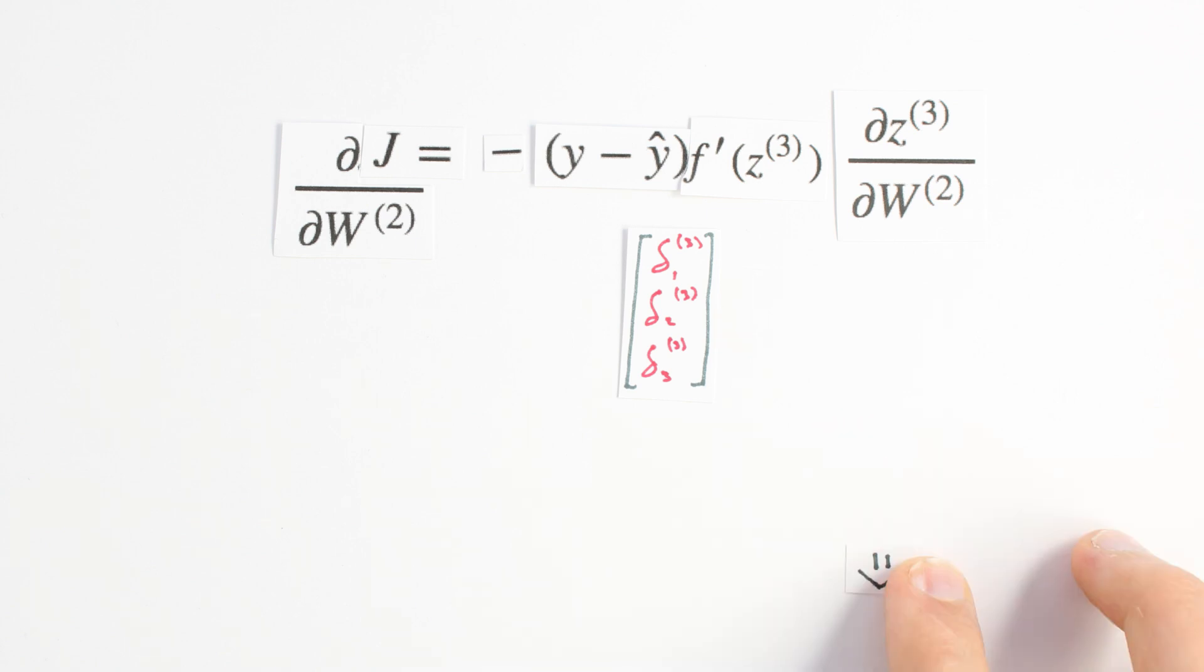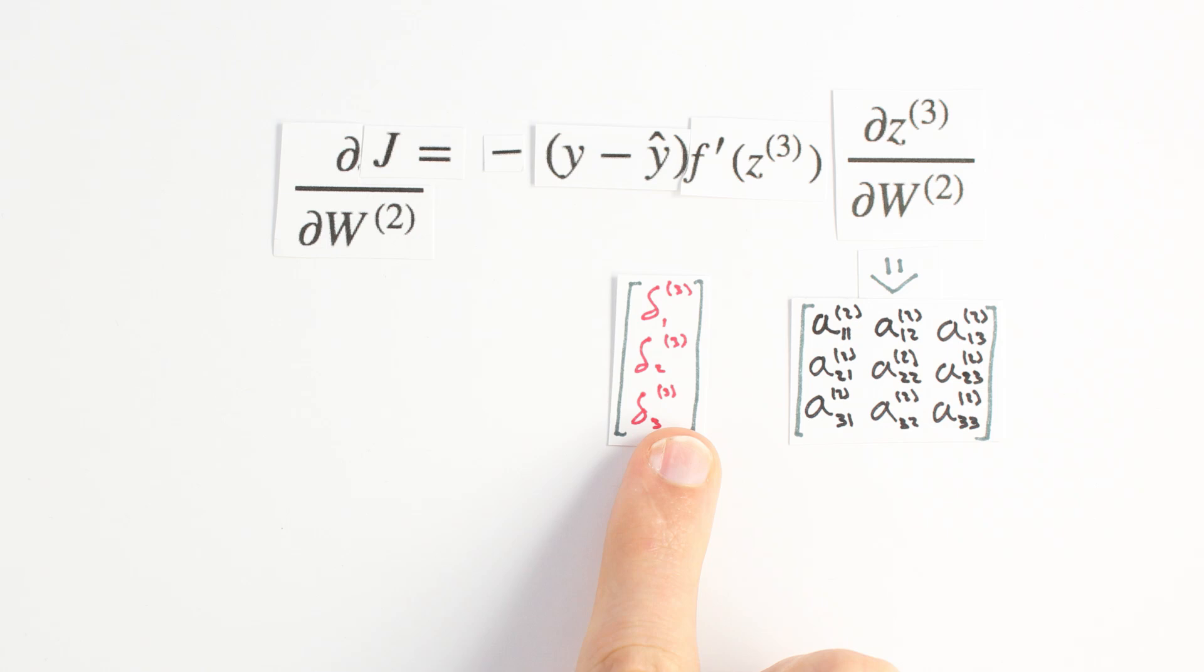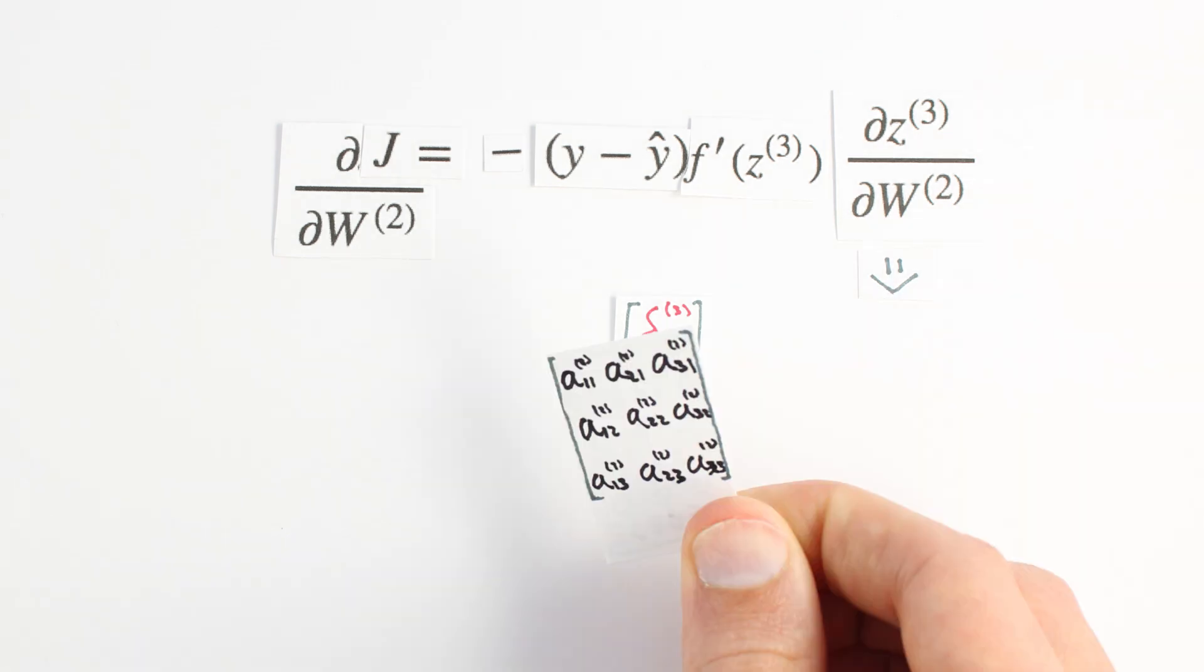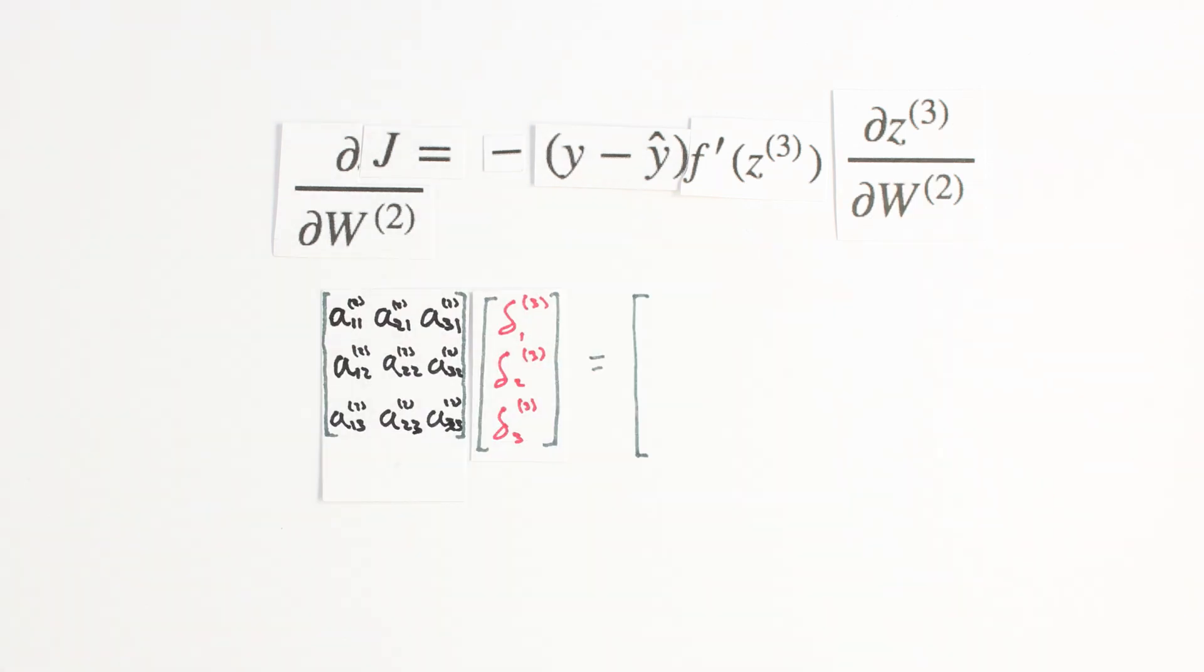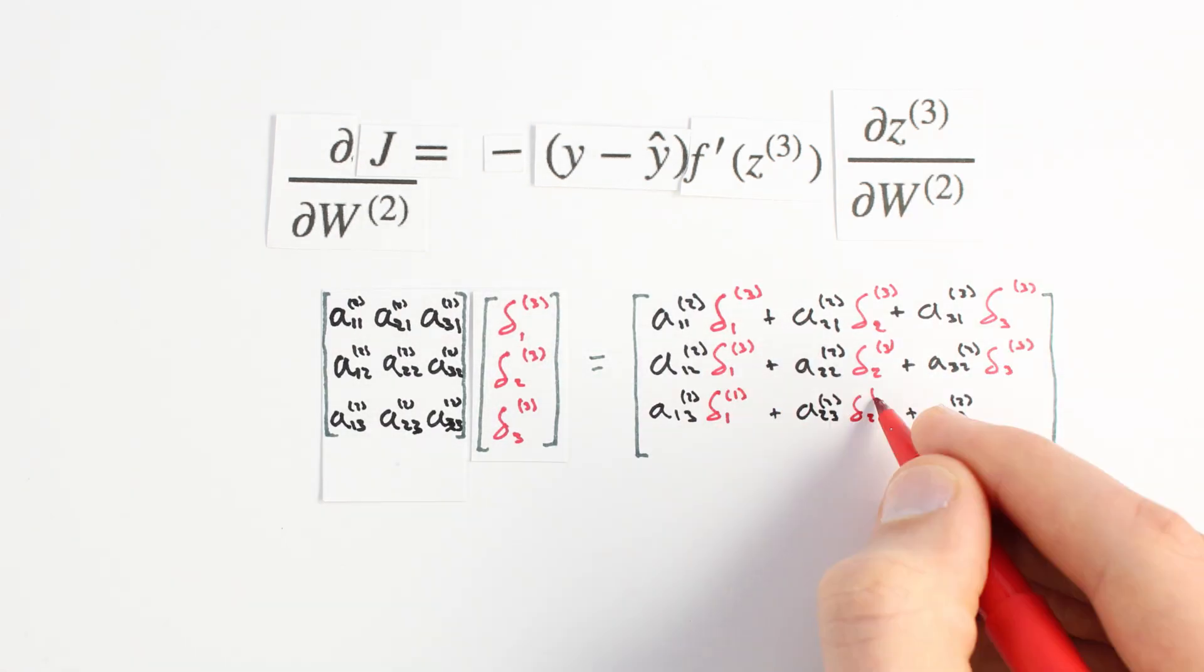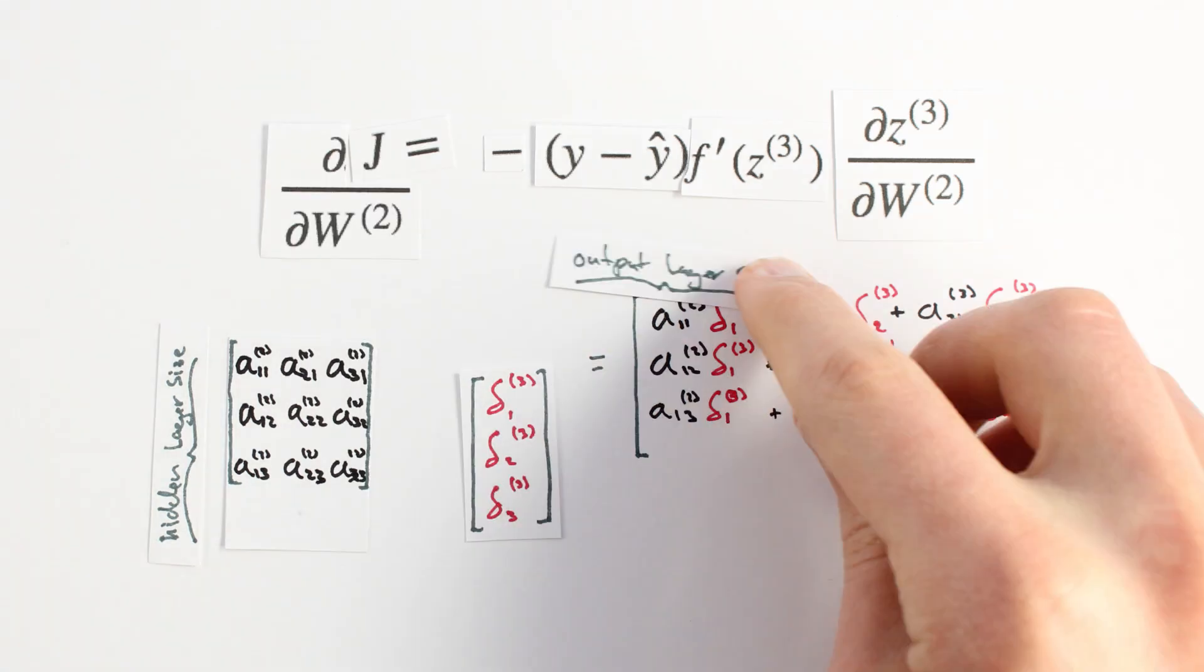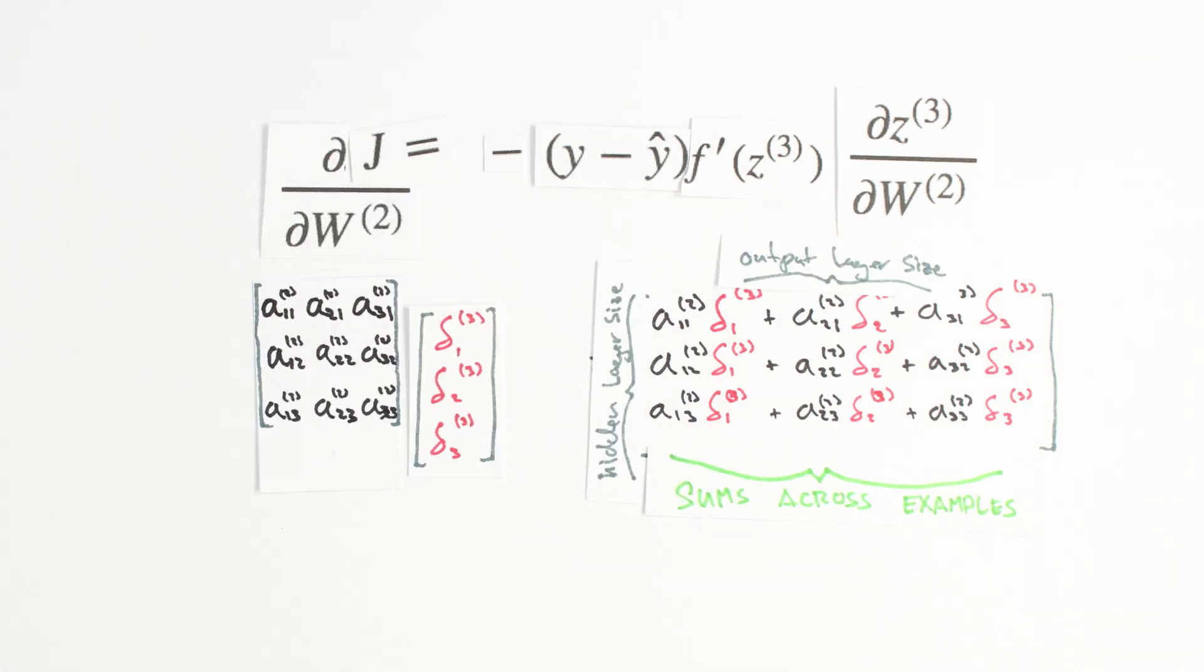We determined that dz3dw2 is equal to the activity of each synapse. Each value in delta3 needs to be multiplied by each activity. We can achieve this by transposing a2 and matrix multiplying by delta3. What's cool here is that the matrix multiplication also takes care of our earlier omission. It adds up the djdw2 terms across all our examples.